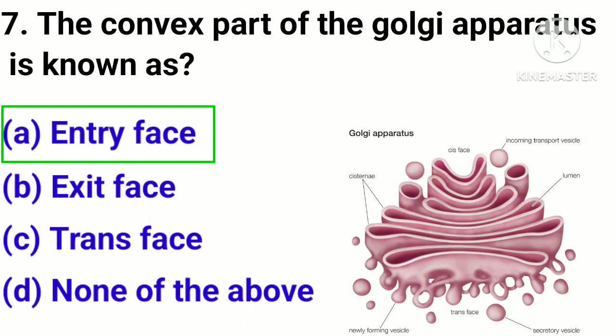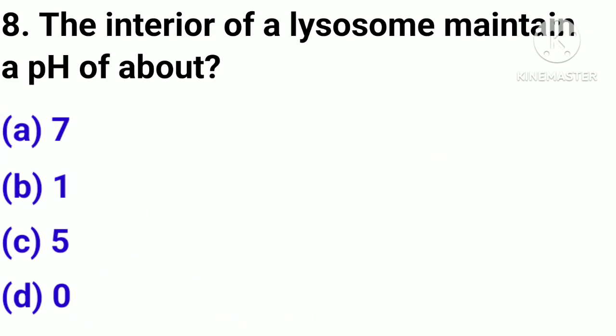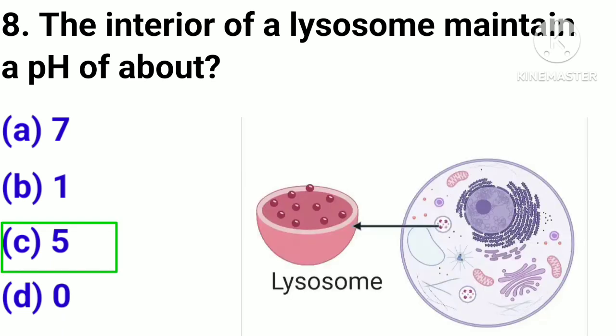Correct answer: option A, Entry face. Question number 8. The interior of a lysosome is maintained at a pH of about: option A, 7; option B, 1; option C, 5; option D, 0.